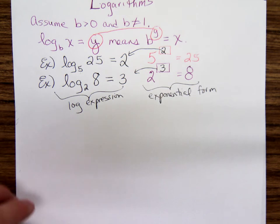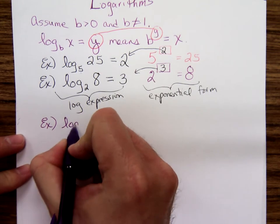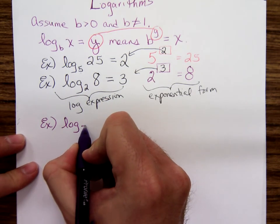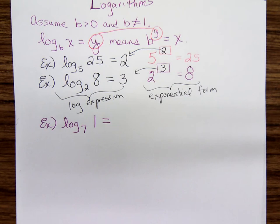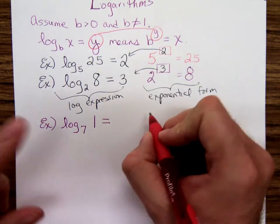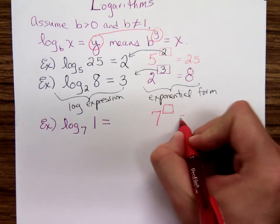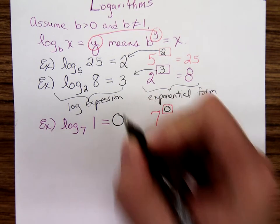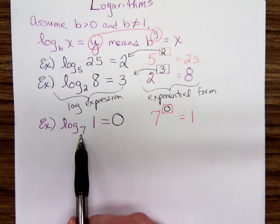What about this one? Here's an example that's going to require you remember some exponential properties we reviewed the other day. Log base 7 of 1. You're thinking, what exponent? What exponent do you put on 7 in order to get a 1? Remember that rule about a 0 exponent? Log base 7 of 1 is 0. The natural question to ask is, is there something special about that 7 or could that 7 be any positive number?